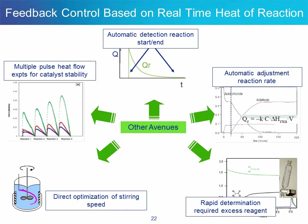This was one example of the applications that real-time heat measurement allows. We have other ideas in mind and will certainly work hard to validate them. Some of them include: automatic determination of reaction start and end points based on reaction heat; automatic adjustment of reaction rate through reaction heat; one-shot determination of how much excess reagent is necessary to drive a reaction to completion; optimization of stirring speed for a reaction limited by mass transfer; and more forward-thinking examples like catalyst stability studies using multiple pulse heat experiments.